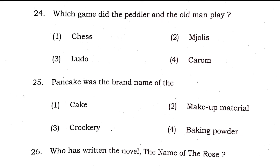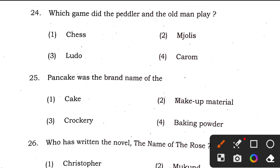Question 24: which game did the peddler and the old man play? The old man here refers to the crofter from the Rattrap chapter, and the right answer is option 2, mjölis. Question 25: Pancake was the brand name of — from the Poets and Pancakes chapter — the answer is again option 2.